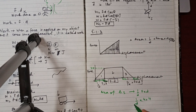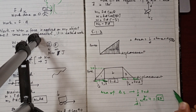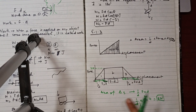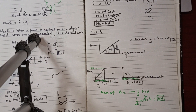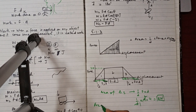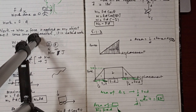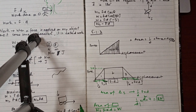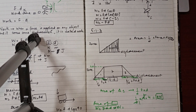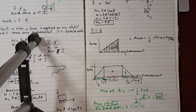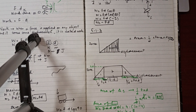Area of triangle 1: ½ × 4 N × 4 m = 8 N·m. Area of rectangle 2: force × displacement = 4 N × (12 − 4) m = 4 × 8 = 32 N·m. Triangle 1 and triangle 3 are the same, so area of triangle 3 = 8 N·m.